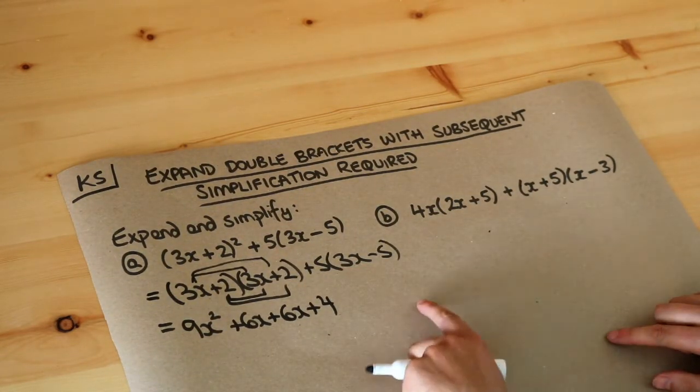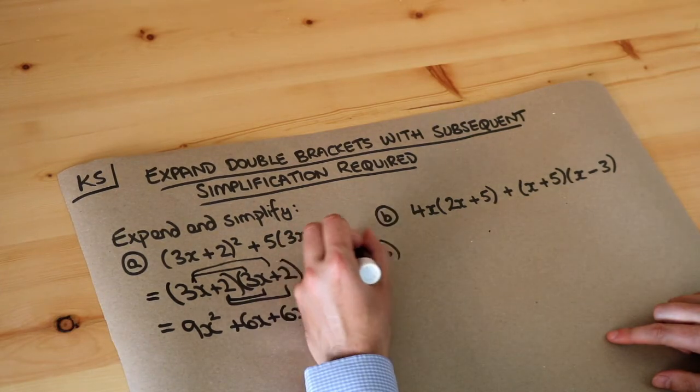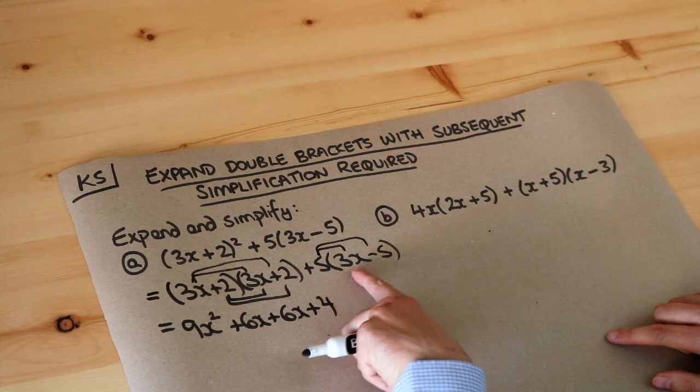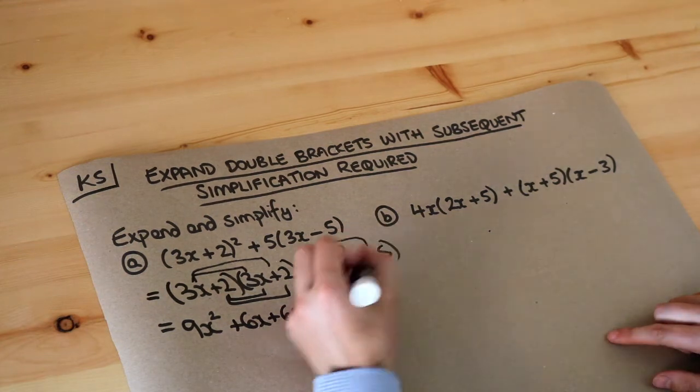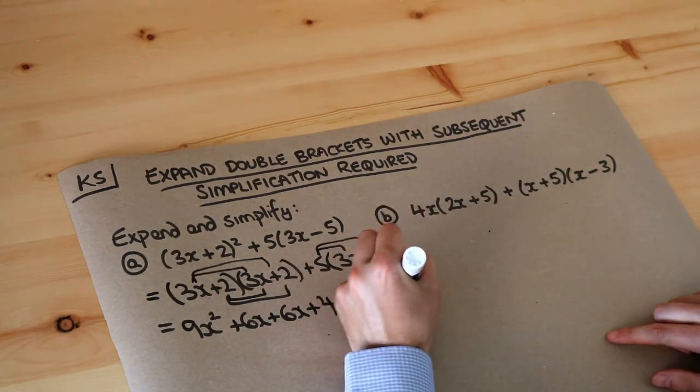So remember to expand out a single bracket we do the thing in the front of the bracket multiplied by each of the things inside the bracket. So we do the 5 times the 3x. 5 lots of 3x is 15 lots of x and 5 times minus 5 is negative 25.